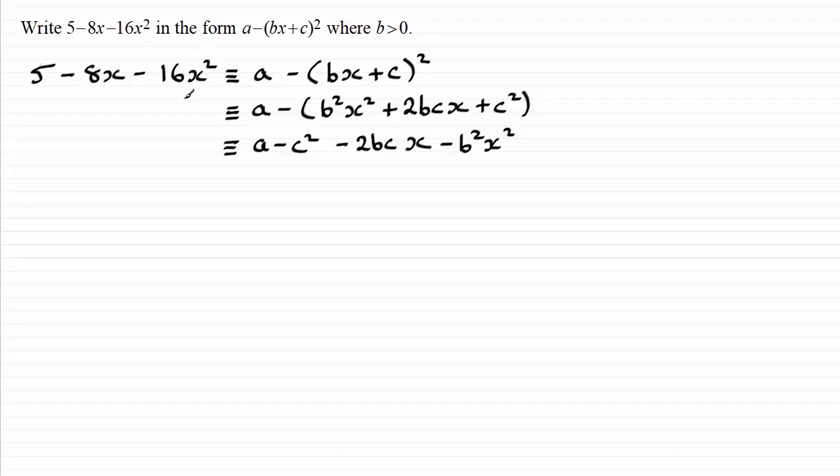So we start now by comparing the coefficients of the x squared term. In other words, what we've got here is the coefficient of x squared is the minus 16, and that compares with the minus b squared. So what we have then is that b squared must be equal to 16.